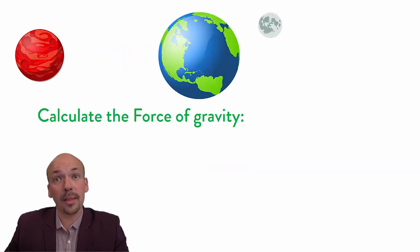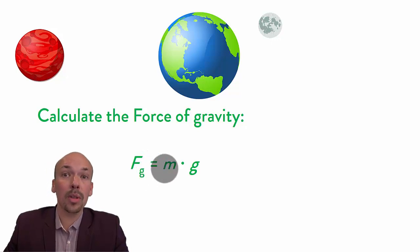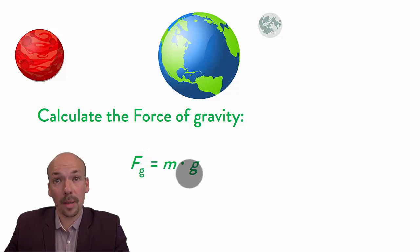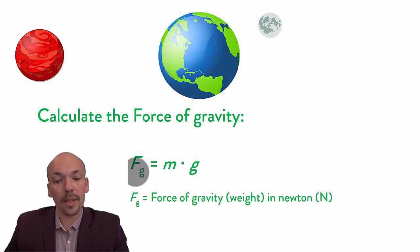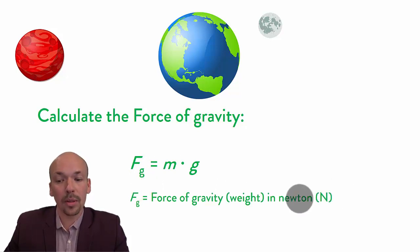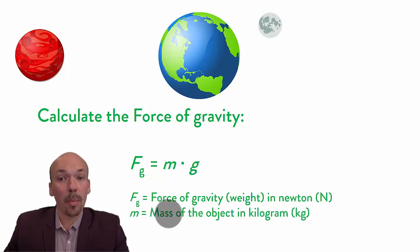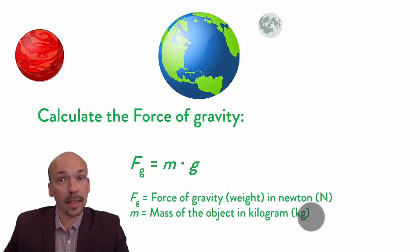To calculate the force of gravity we need this equation: Fg equals m times g. Fg is the force of gravity and it's calculated in newtons — the unit is newtons, the capital N. M is the mass of the object, and the unit is kilograms, kg.